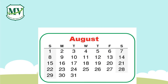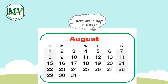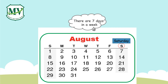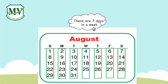Look at this calendar. Its month is composed of weeks and days. There are 7 days in a week. Its letter here stands for the name of each day. We have Sunday, Monday, Tuesday, Wednesday, Thursday, Friday, and Saturday. They form a column.